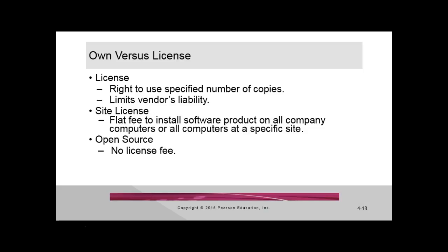When we have licenses, there are different types. A license is a right to use a specified number of copies. A lot of times we have a personal license for home use. It limits the vendor's liability and allows you to use a copy. As a manager working for an organization, you'll often have what's called a site license, which is a little different. St. Francis University has a site license for Microsoft Office — we pay Microsoft a fee every year that says everyone associated with St. Francis can download Microsoft Office: all students, faculty, employees, and administrators. It's a flat fee to install software on all company computers at a specific site.